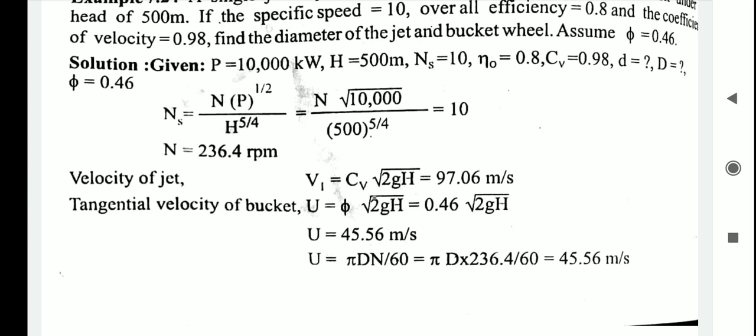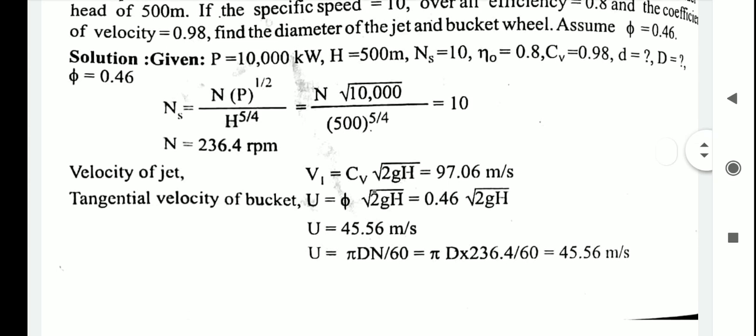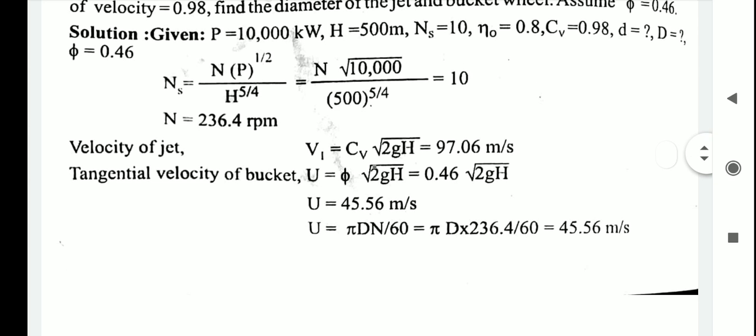Next, calculate the tangential velocity of the bucket U: U = phi × √(2gH), where phi = 0.46. Substituting phi = 0.46, g = 9.81, and H = 500, we get U = 45.56 meters per second.